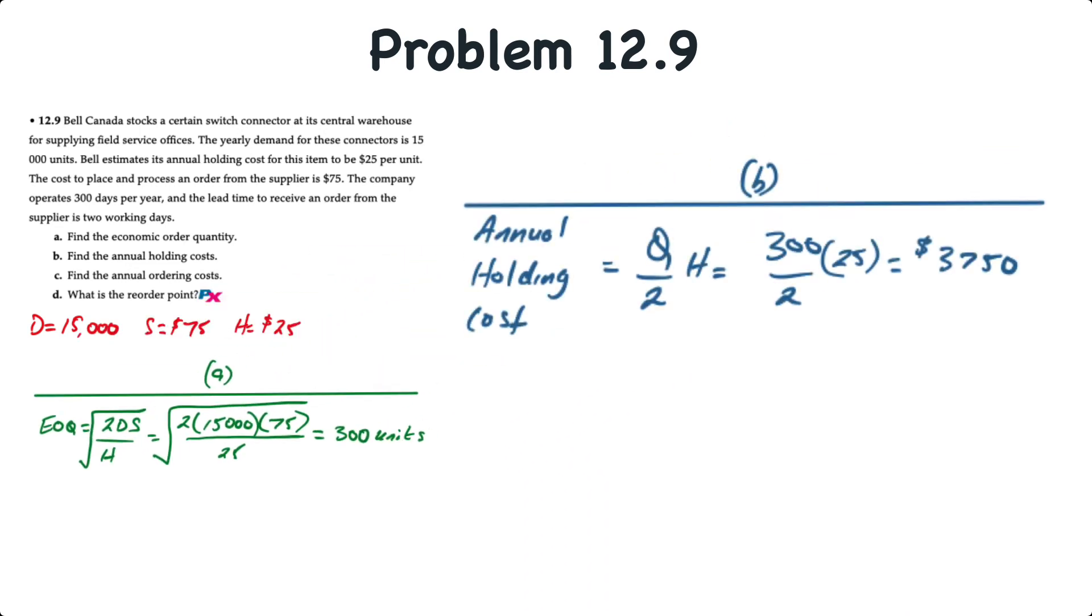For requirement B, the annual holding cost is equal to the average inventory, or Q over two times the holding cost. So our 300 unit EOQ divided by two times the $25 holding cost gives us an annual holding cost of $3,750.